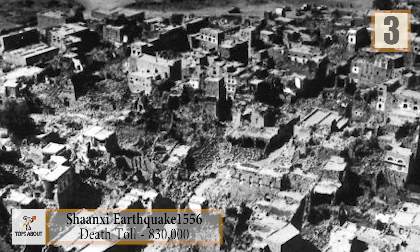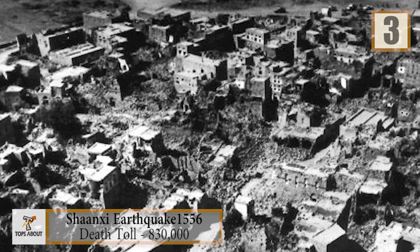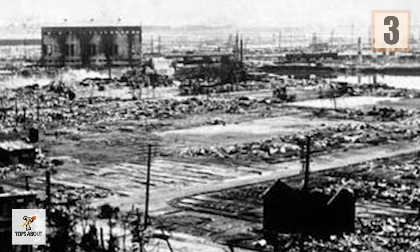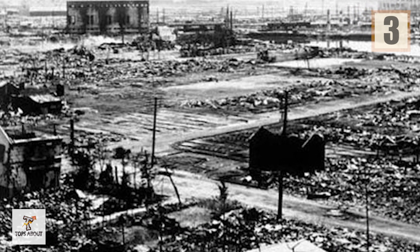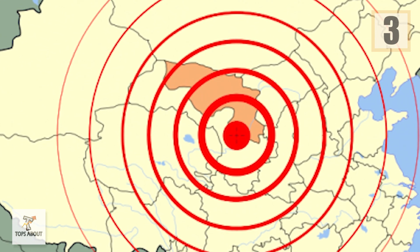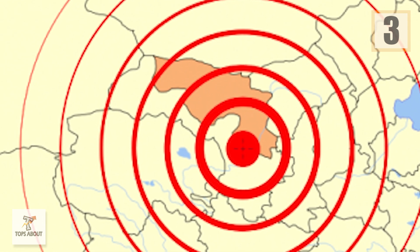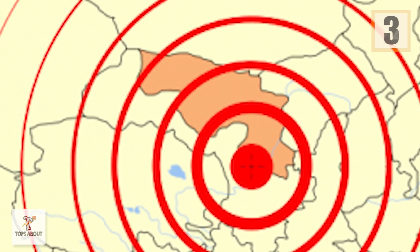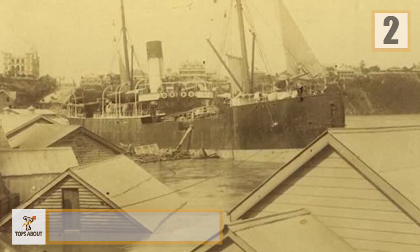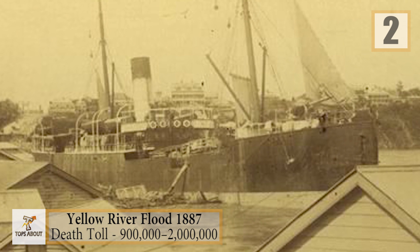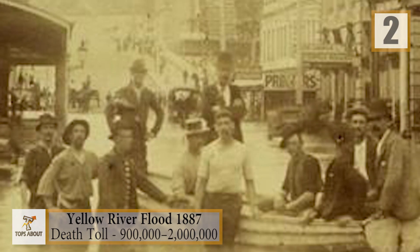Number 3: 1556 Shaanxi Earthquake. The 1556 Shaanxi earthquake, also known as the Huaxian earthquake or the Jiajing earthquake, was a catastrophic earthquake and is the deadliest earthquake on record, killing approximately 830,000 people. It occurred on the morning of January 23rd, 1556, in Shaanxi during the Ming Dynasty.